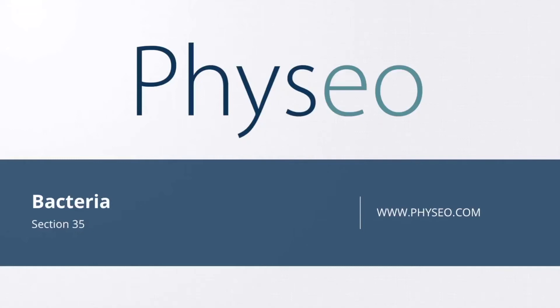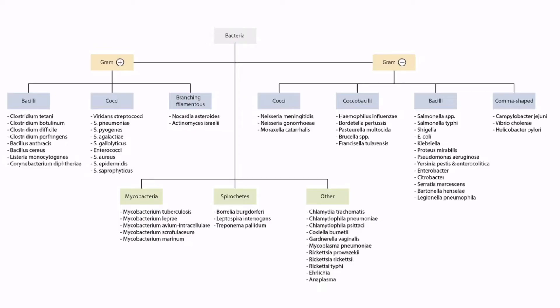Welcome to section 35 of Bacteria. This is our bacteria overview figure, and in this video we'll be discussing three organisms: Enterobacter, Citrobacter, and Serratia marcescens, which you can see right here.